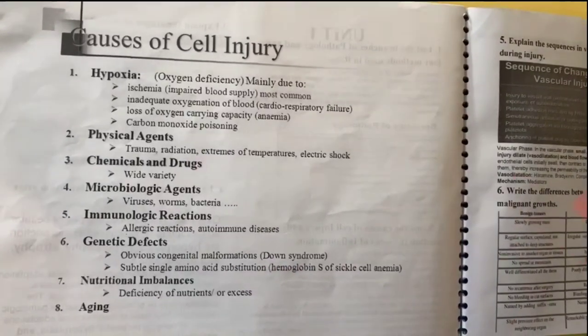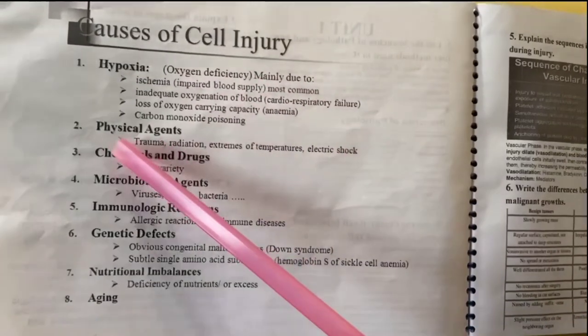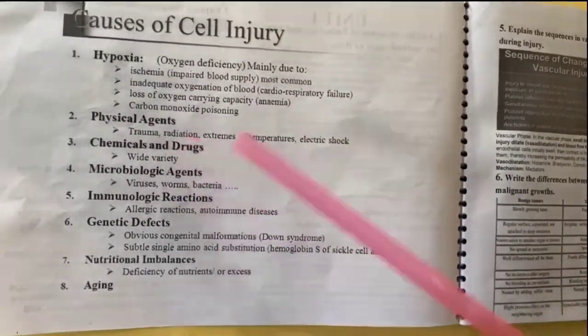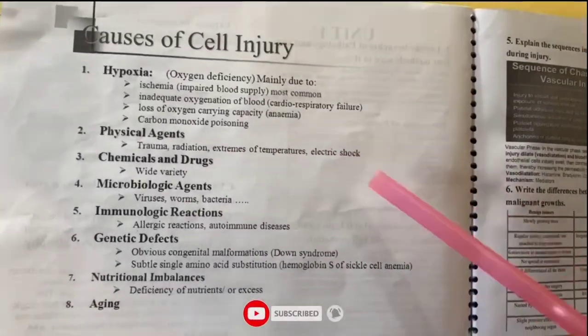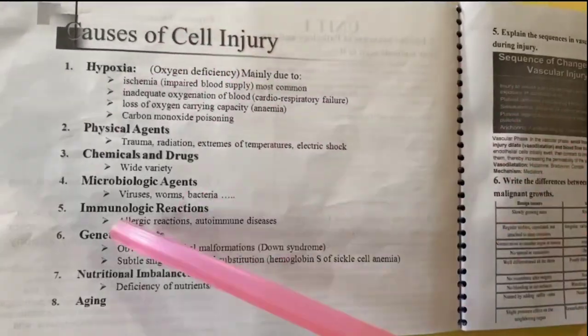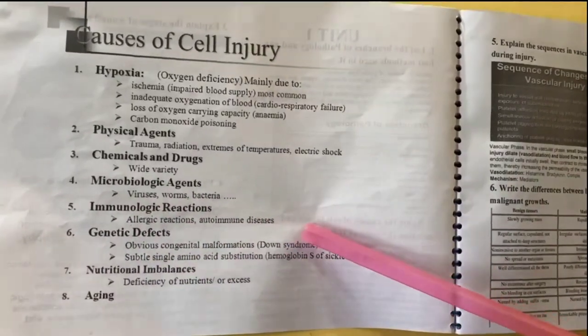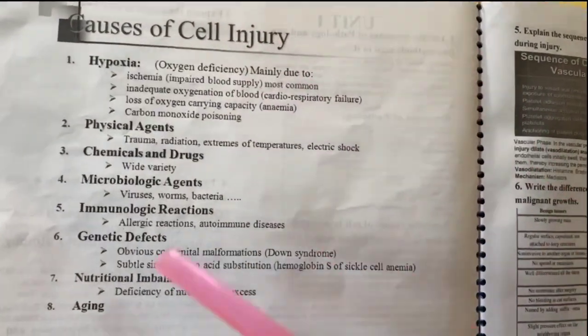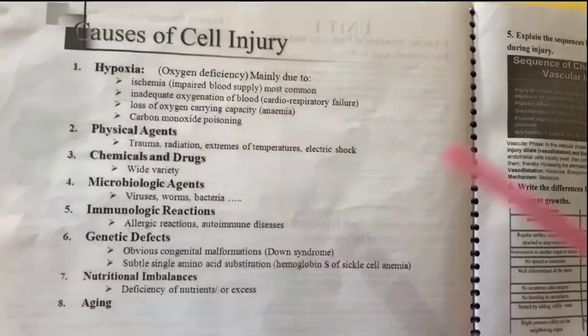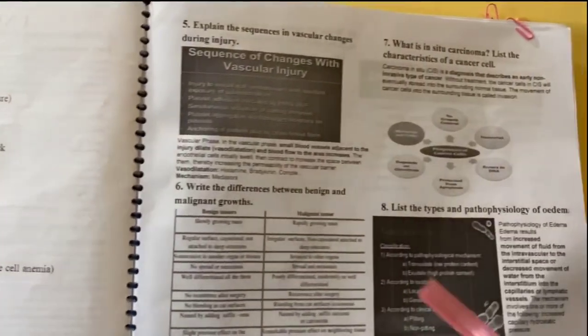The causes of cell injury include: hypoxia, which means oxygen deficiency; physical agents such as trauma, radiation, extremes of temperature, and electric shock; chemicals and drugs, as various types of chemicals and drugs can cause cell injury; microbiological agents such as viruses, worms, and bacteria; immunological reactions including allergic, autoimmune, and hypersensitivity reactions; genetic defects, for example Down syndrome; nutritional imbalances such as deficiency or excess of nutrients; and aging.